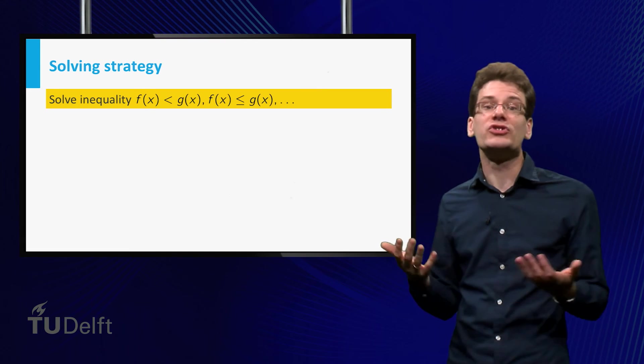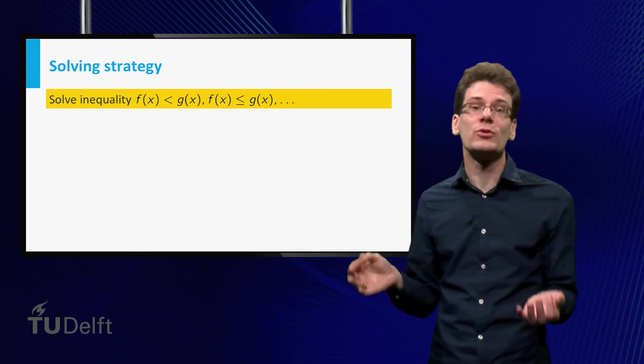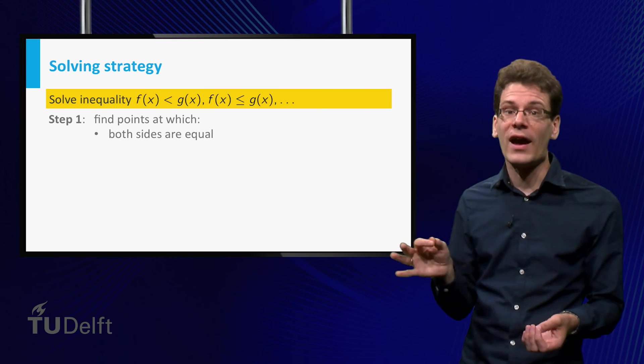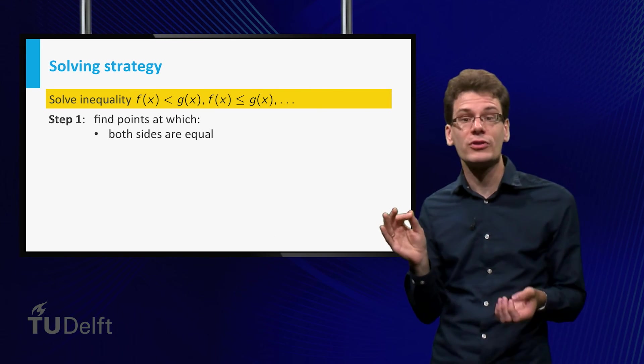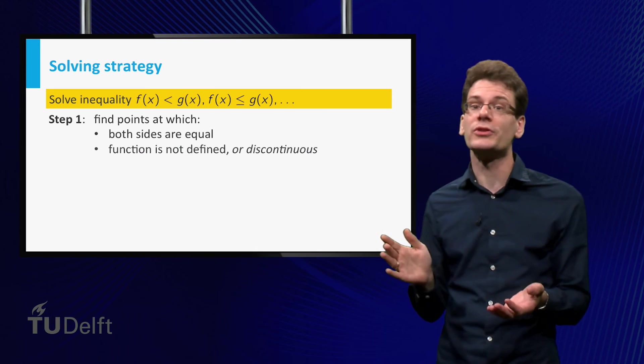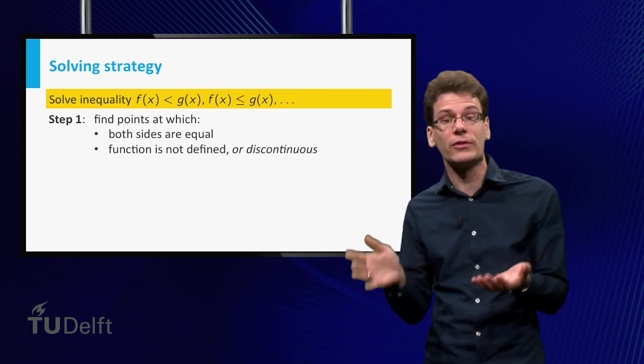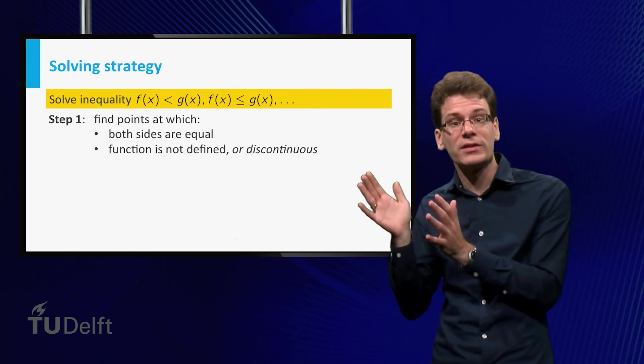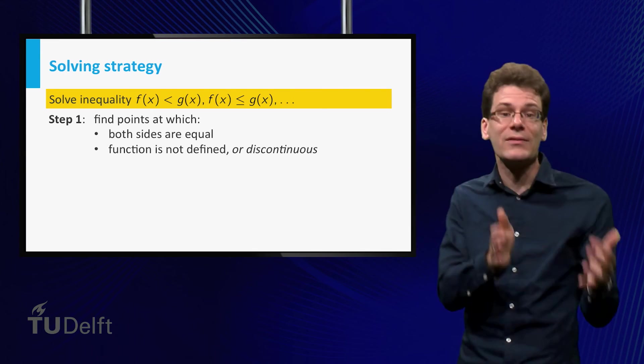The example illustrates the general method. Suppose you want to solve an inequality. Then, first find the x values where the functions are equal, and the points where one of the functions is not defined, or has a discontinuity. At such points, the inequality can change from valid to invalid.